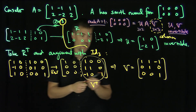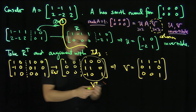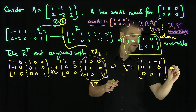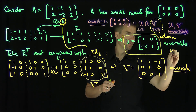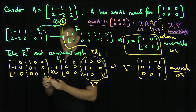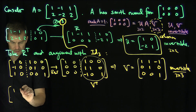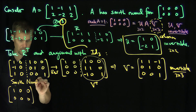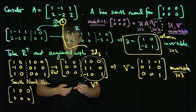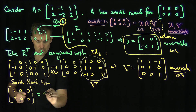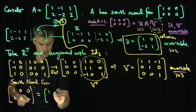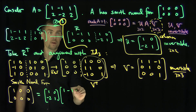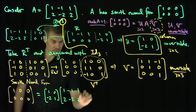Now I have the full decomposition of matrix A. The Smith normal form [[1,0,0],[0,0,0]] equals U times A times V, where U = [[1,0],[-2,1]] is 2 by 2 invertible, A = [[1,-1,1],[2,-2,2]] is the original matrix, and V = [[1,1,-1],[0,1,0],[0,0,1]] is 3 by 3 invertible.